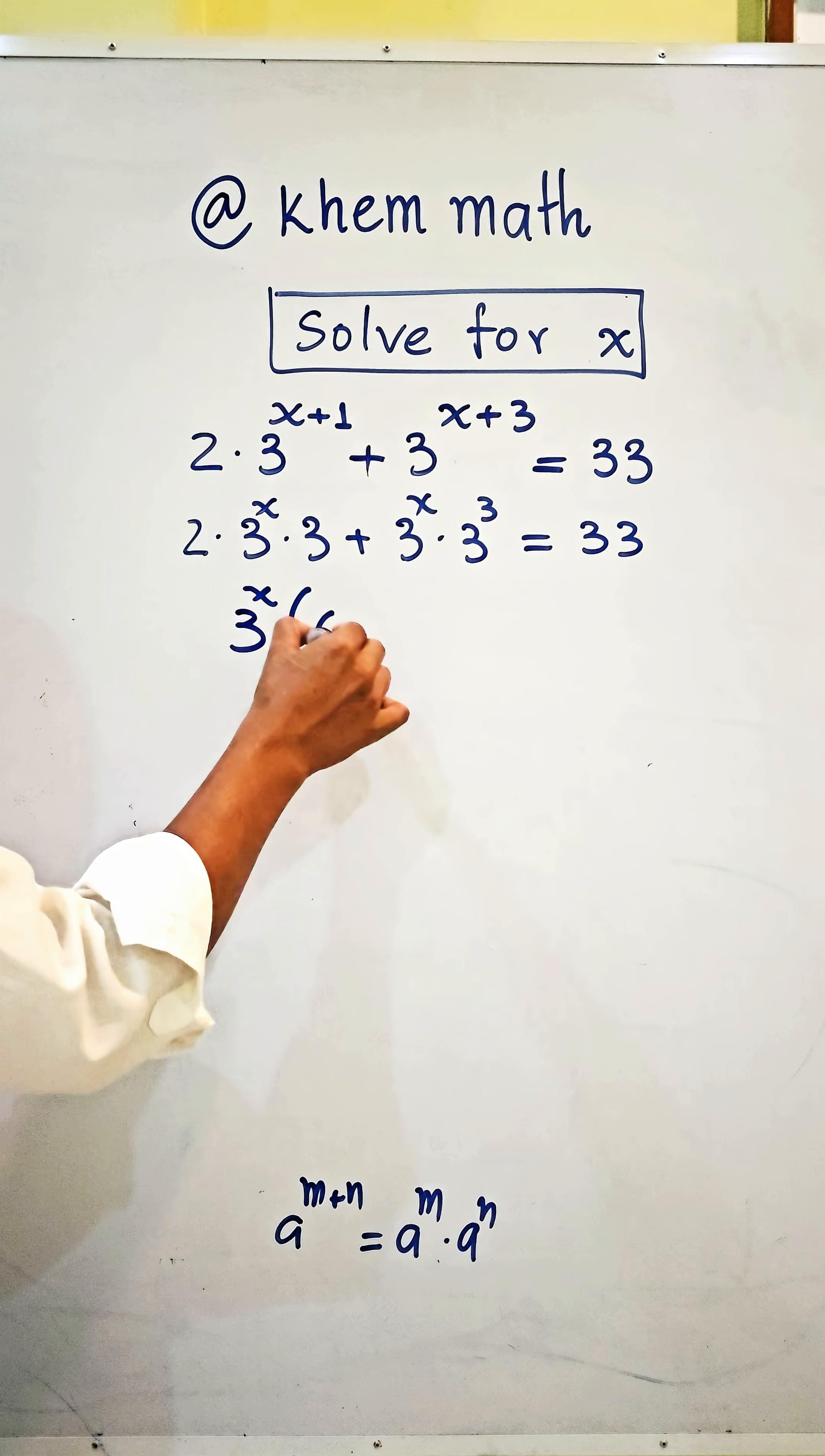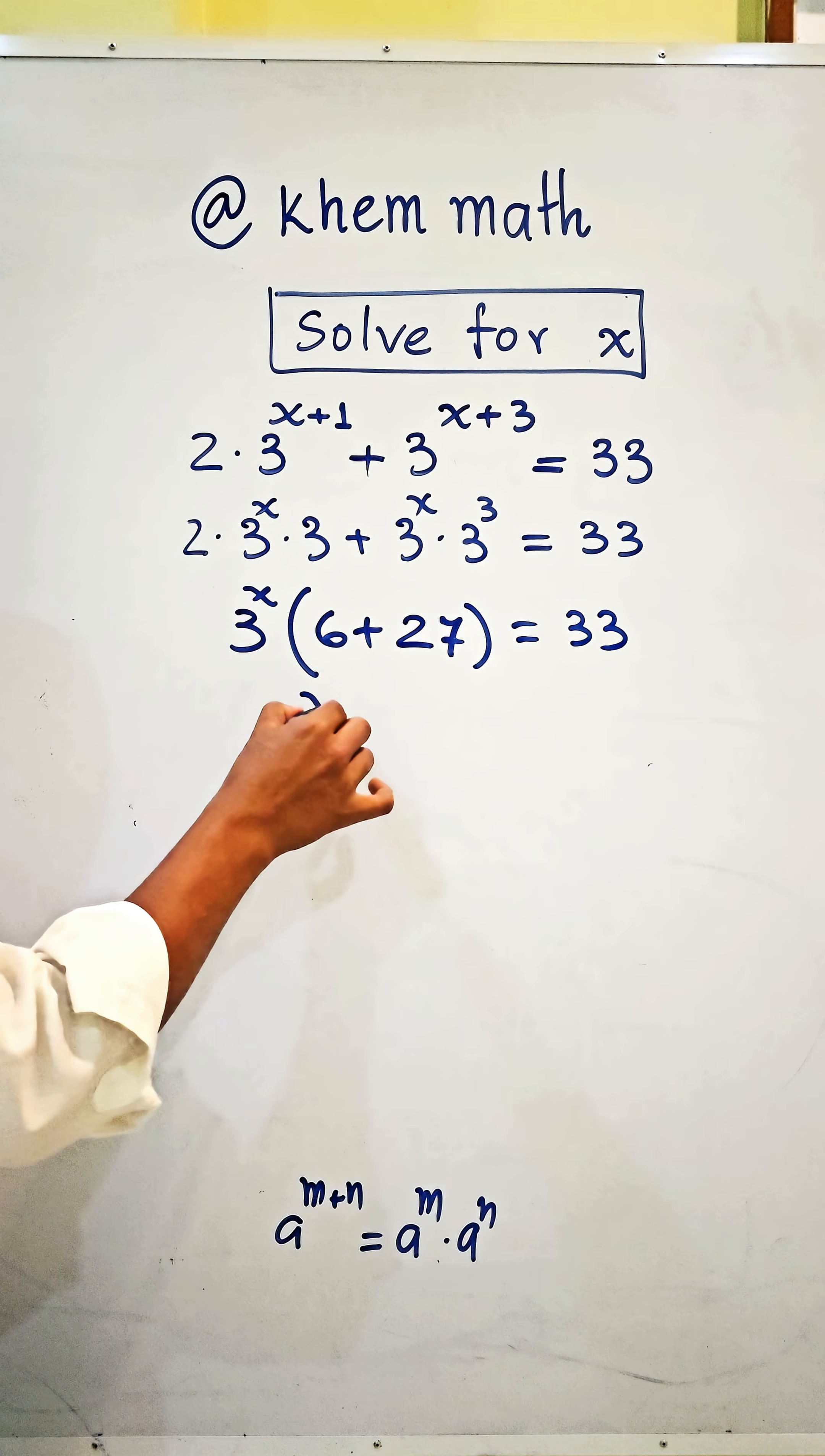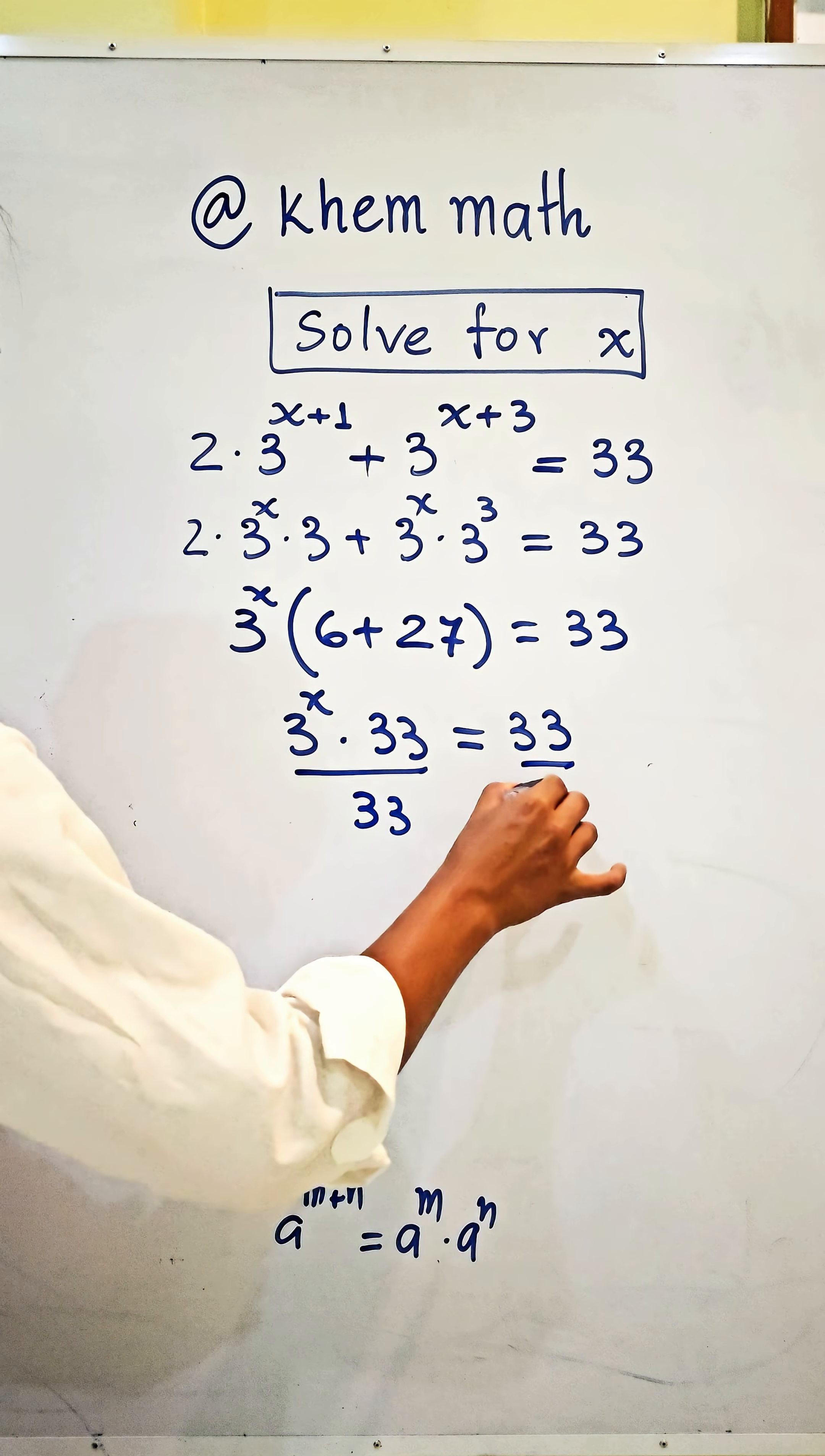Times 3 we get 6, and plus 3 power 3 equals 27, which equals 33. So we get 3 power x times 33 equals 33. Then we divide this equation by 33, so we get: